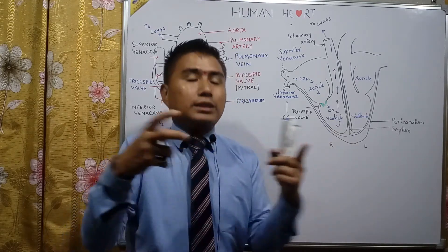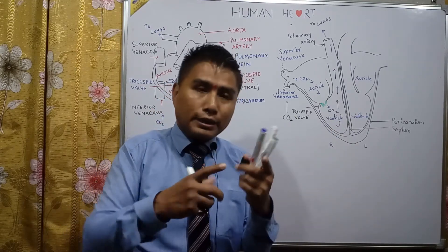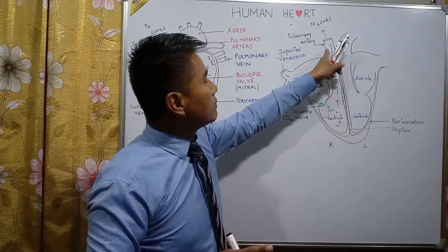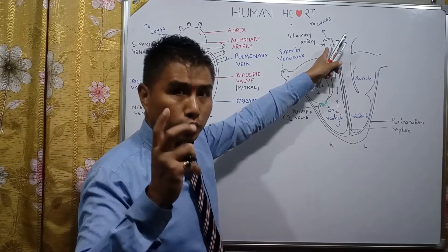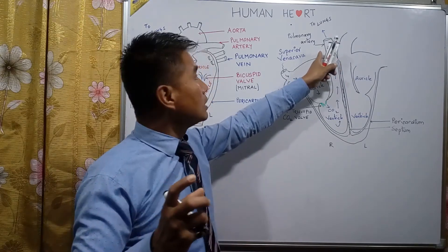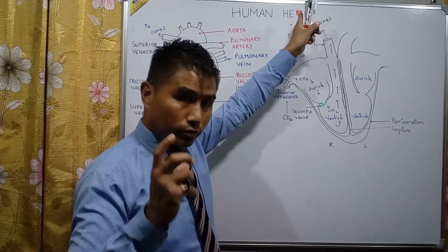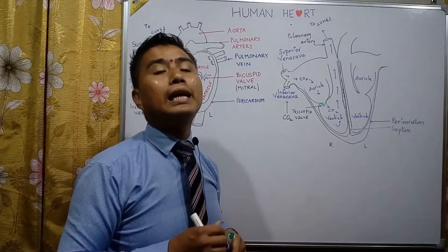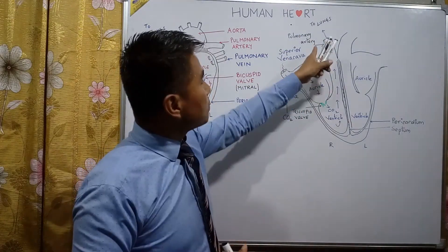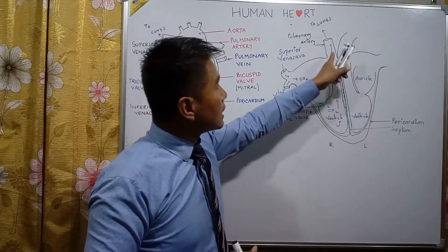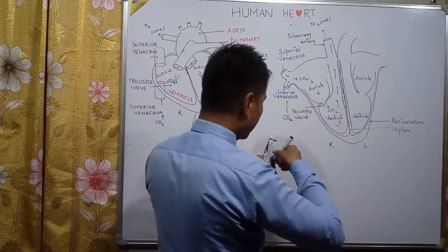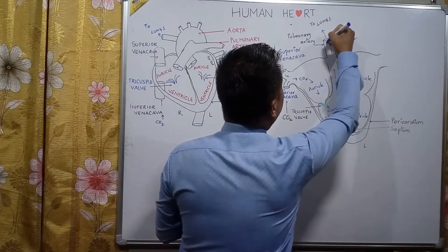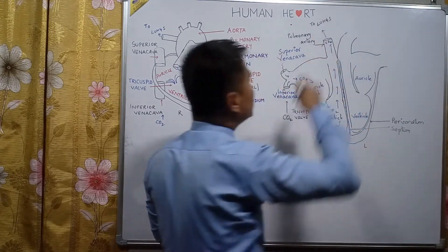Since it has to withstand the pressure of the ventricle, it has to be strong — which is why it is an artery. 'Pulmonary' refers to the lungs and 'artery' means a strong, muscular, elastic blood vessel. So the pulmonary artery carries carbon dioxide-containing blood to the lungs.